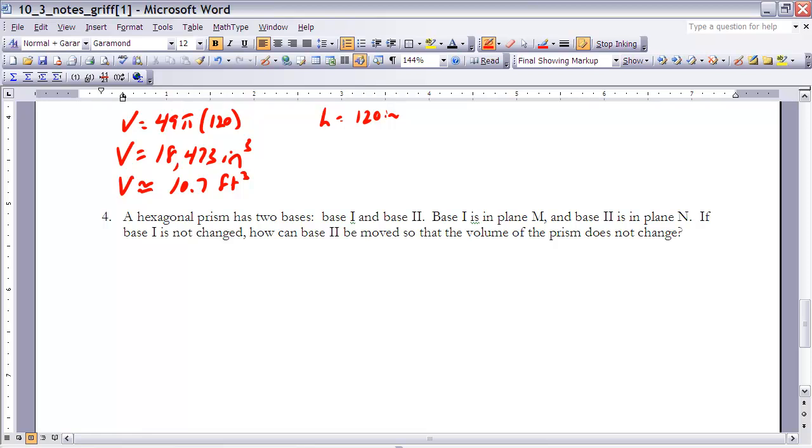Basically, what we want to do is we want to think about Cavalieri's Principle here. And as long as we know that they remain in the same plane, their heights will remain the same and their base areas will remain the same. Therefore, their volumes will remain the same. So all I need to know is that base two remains in plane N and if that happens, they will have the same volume. So plane N has to contain that base two.